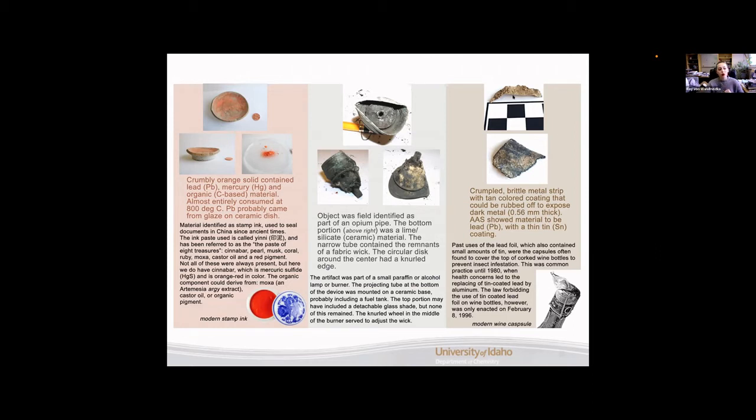Our last artifact from this site was a very small piece of crumpled brittle metal strip. It had this tan coloring on the outside, but when you rubbed it you could see the internal material was actually a very dark color and it was very thin. Atomic absorption spectroscopy showed that this material was lead primarily and then it had a thin tin coating. So past uses of lead foil, which also contains small amounts of tin, are actually for the coverings on a cork of a wine bottle to prevent insect infestation as they would be able to burrow through the cork but not through the lead and the tin. However, this was very common practice up until 1980, but then people realized it really wasn't a good idea to have lead or tin near foods or liquids. So then this tin coated lead was replaced by aluminum. However, it took almost 20 years for there to actually be laws forbidding the use of the tin coated lead foil on wine bottles. So it was advised against during this time period, but still widely used until 96.